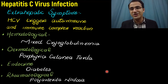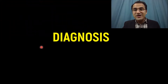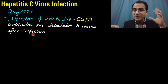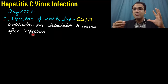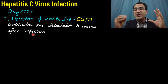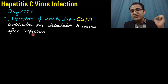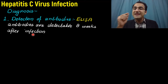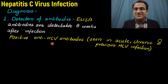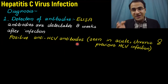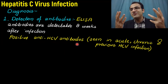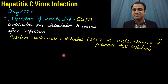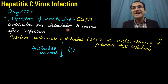Diagnosis of hepatitis C virus is made by detection of antibodies in the blood. Antibodies formed against HCV are detected by ELISA, and these antibodies are detectable eight weeks after infection. Positive anti-HCV antibodies are seen in acute cases, chronic cases, and also in previous HCV infection, since patients who have cleared the infection still carry antibodies against HCV.